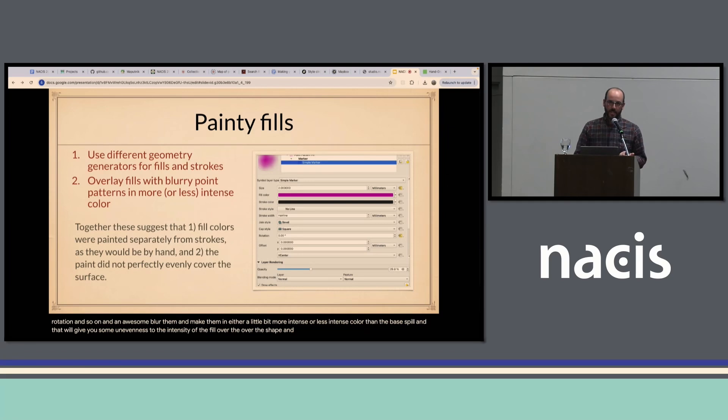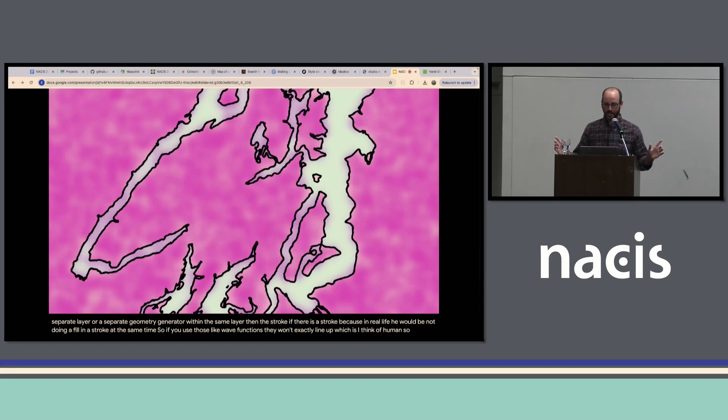And secondly, I like to do those in a separate, either a separate layer or a separate geometry generator within the same layer than the stroke if there is a stroke, because in real life you would not be doing a fill and a stroke at the same time. You would probably be painting over the stroke or the stroke over the paint or something. If you use those wave functions, they won't exactly line up which is I think kind of human. Not my best example here but you might be able to get the idea of how it's uneven. It could be done better than this for sure.